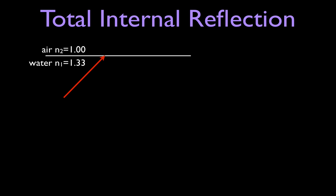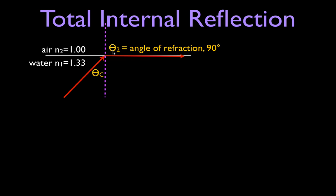We want to know what that critical angle is. If we shine the light at the right angle, the light will not be reflected and it will not be transmitted across that boundary, but it will actually travel along that boundary. That means we have an angle of incidence that has produced a situation where the angle of refraction is 90 degrees. The critical angle is the angle of incidence that produces an angle of refraction of 90 degrees.